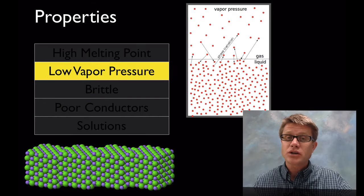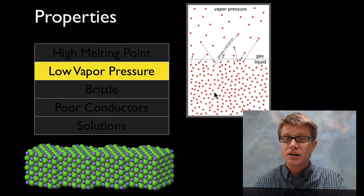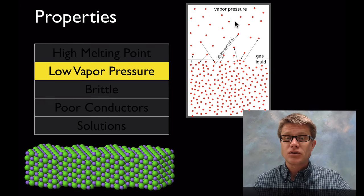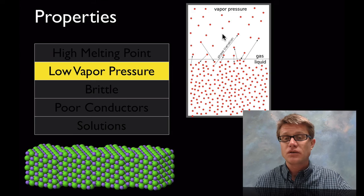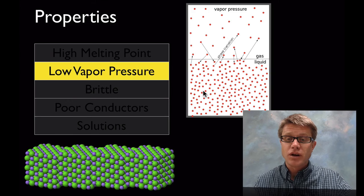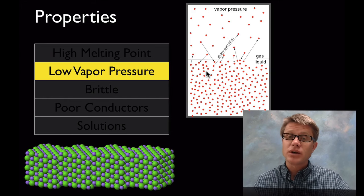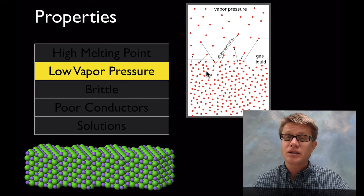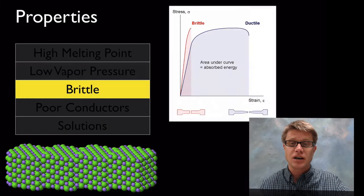They also have a really low vapor pressure. What is vapor pressure? If we put a liquid in a container, the amount of atoms that jump off and form a gas is the vapor pressure. The greater the forces are in that liquid or solid, the lower the vapor pressure is going to be, based on the high attractions in the ionic bonds.